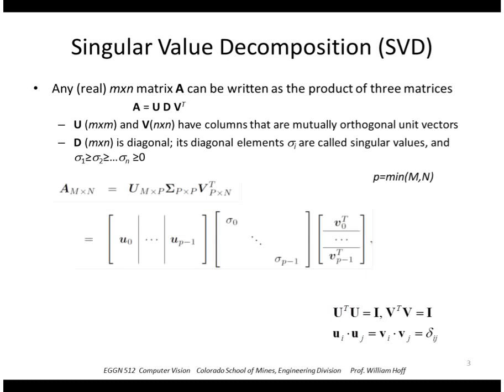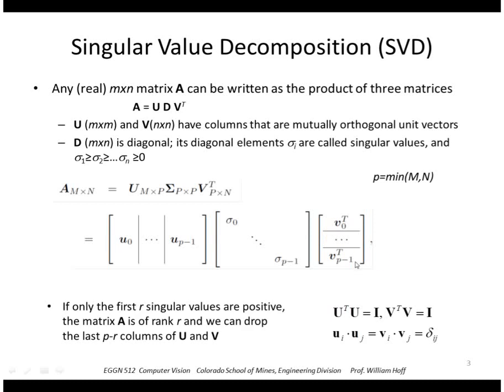So another way to draw that is in this form here, so here we see our U matrix, here's the columns of U, our diagonal matrix D or sigma, and our V matrix whose columns now transpose so they're now rows. So if only the first R singular values are positive, then matrix A is rank R and we can drop the last p minus R columns of U and V because they don't contribute to the formation of A at all.